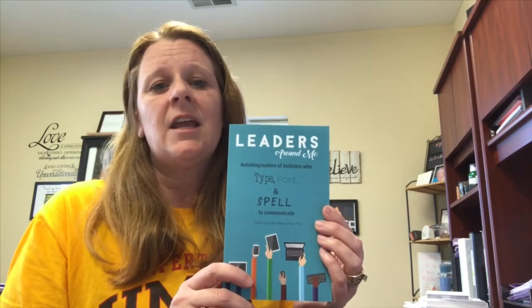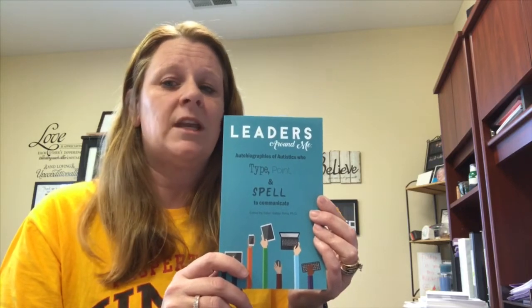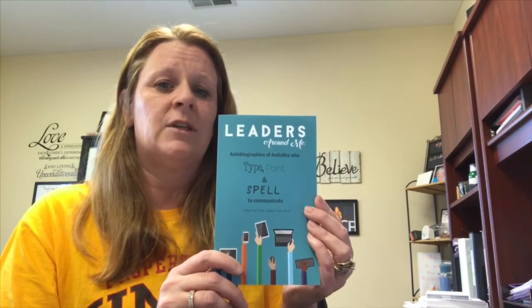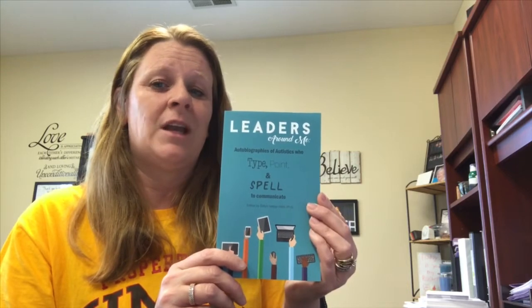The second book — for older individuals, middle school, high school, and into adulthood — is a book my son Adam is a part of called 'Leaders Around Me.' These are autobiographies of autistics who type, point, and spell to communicate. It features 45 non-speaking authors from all over the world who have shared their autobiographies. You can find it on Amazon and it is actually a number one bestseller right now. Another great resource is Tech Talk with Adam Morgan — his YouTube channel where he shares his successes and trials and tribulations. We also have the Adam Morgan Foundation page: www.adamorgan.org.